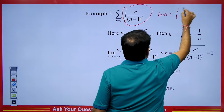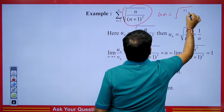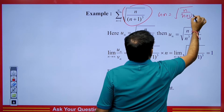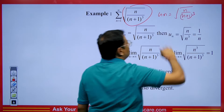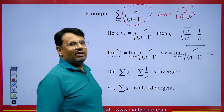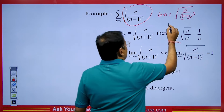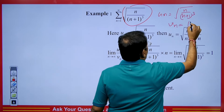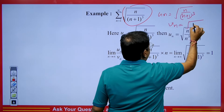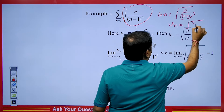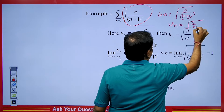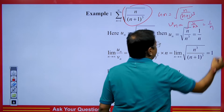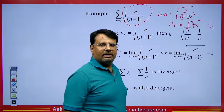The next un is n upon the cube root of n plus 1, that is n upon (n+1)^(1/3). You might ask what to take for vn. Pick n from the numerator and put the constant in the denominator as well. We get n upon n, which cancels. So 1 upon n will be vn.